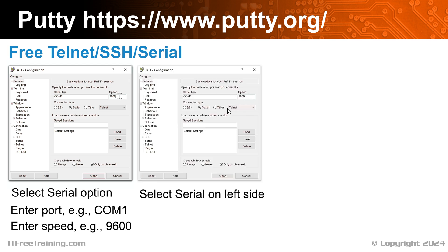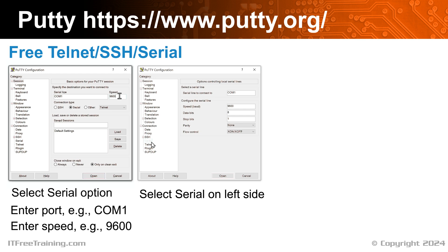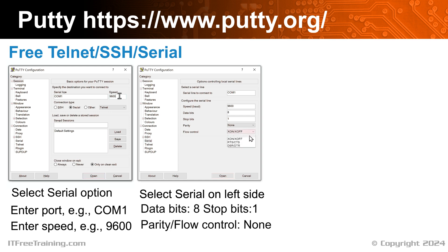Next, you need to set the serial-specific options. To do this, on the left-hand side, select the option Serial. The only option that I will change from the default is to change Flow Control to None. This gives us the following options: Data Bits 8, Stop Bits 1, Parity and Flow Control both being None. These options are pretty common for most devices. Sometimes you may need to change the options — if this is the case, you will need to consult the documentation for the device to find out which settings you need to use, or try trial and error until you get the right settings.